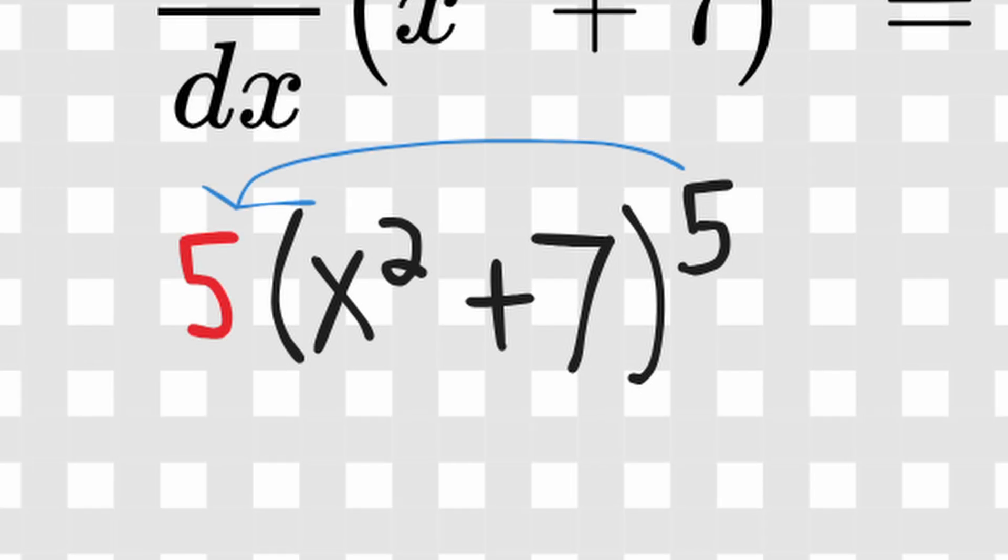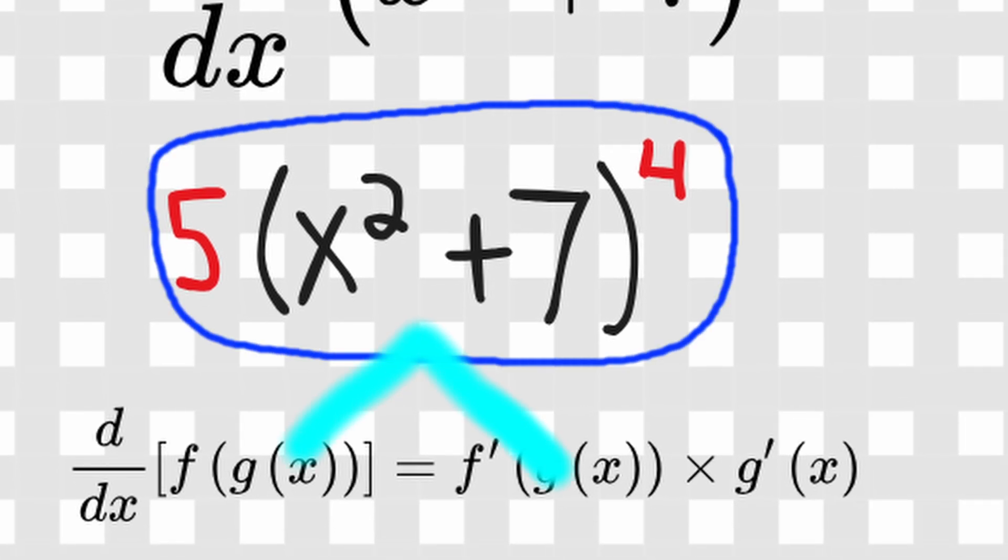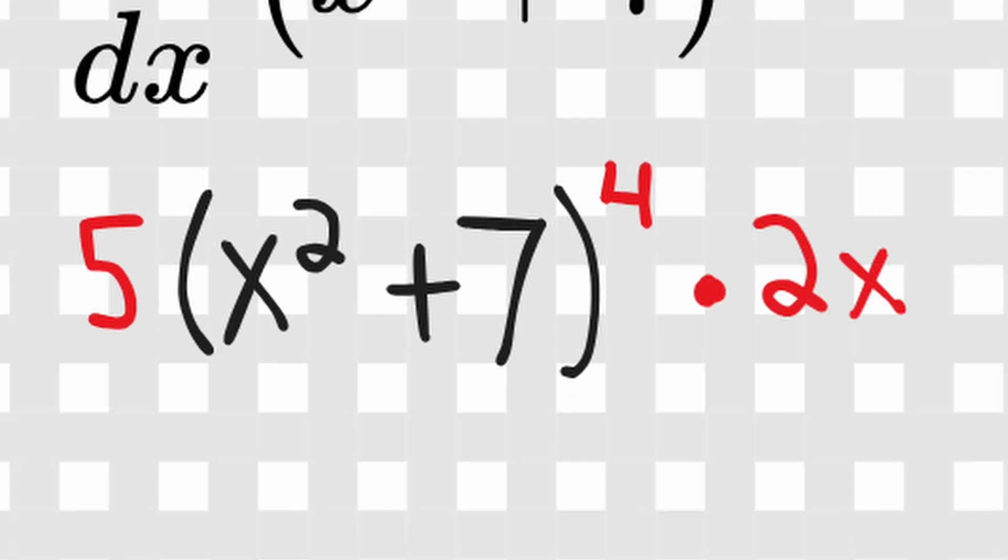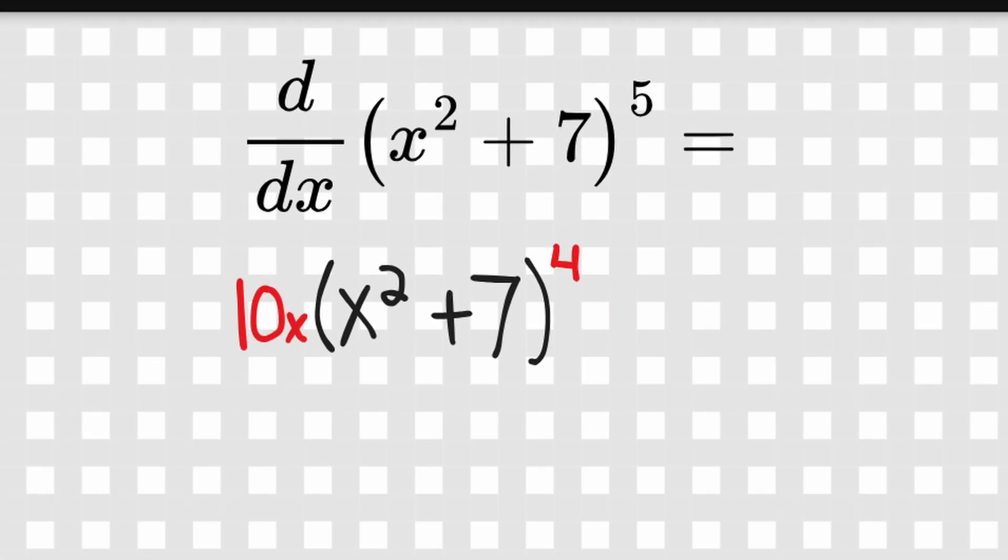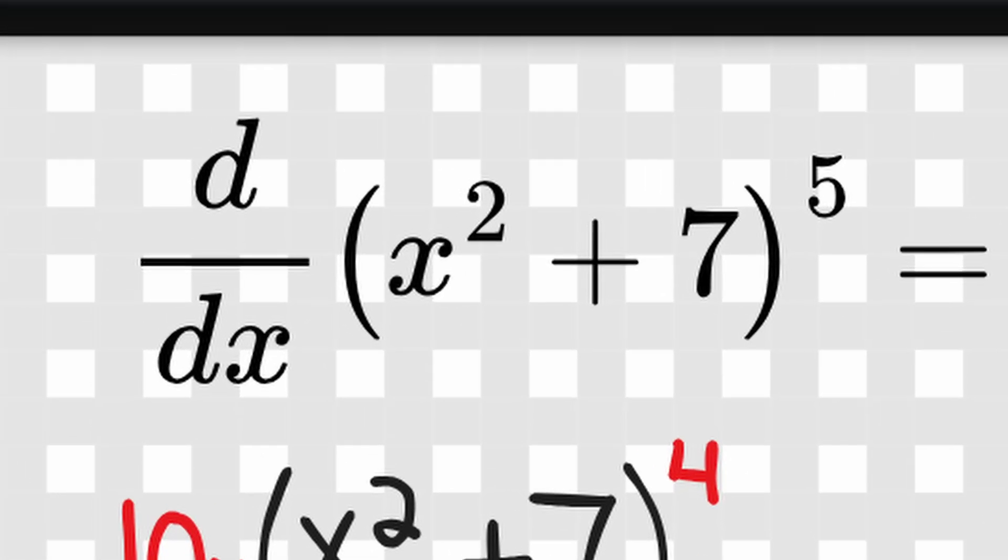Let's start very simply and do the power rule. So we take the 5 down, we don't do anything to the inside function, then subtract the power of 5 by 1. Now, to go along with our chain rule, all we do is multiply this by the derivative of our inside function. So the derivative of x squared plus 7 is 2x. Great! Now let's multiply this to get 10x, and this would be our derivative function of x squared plus 7 to the 5th.